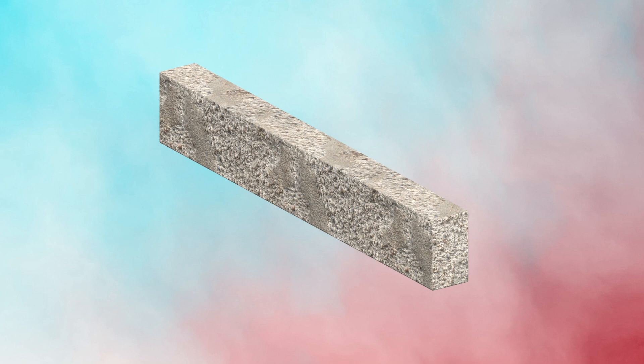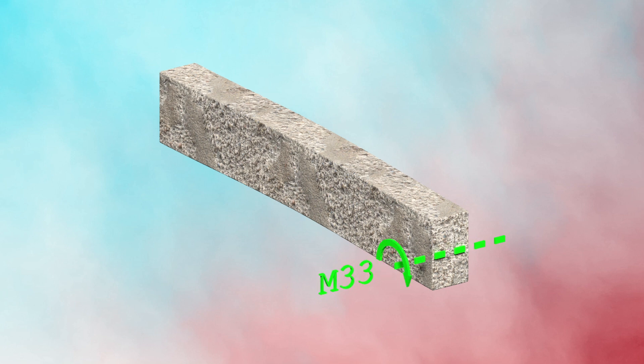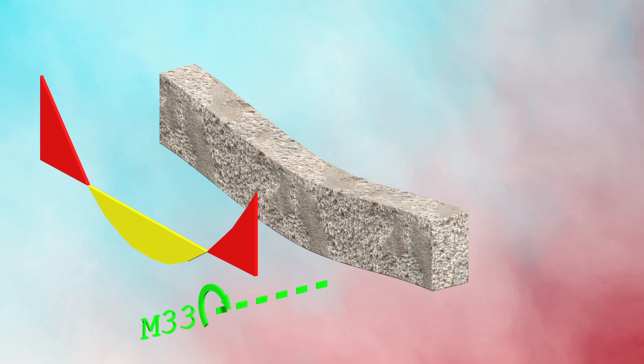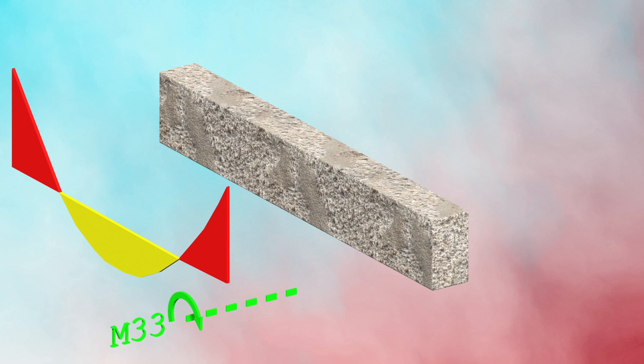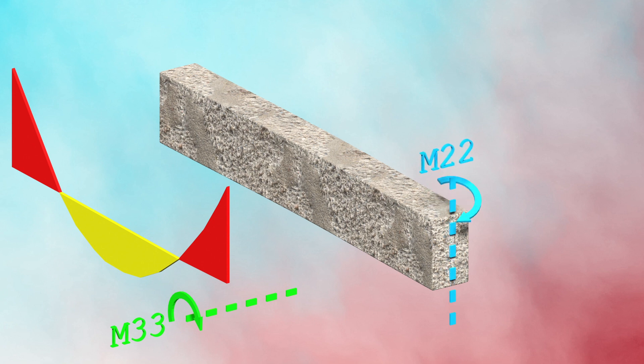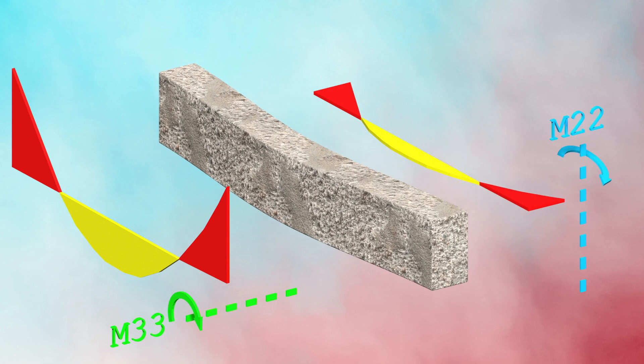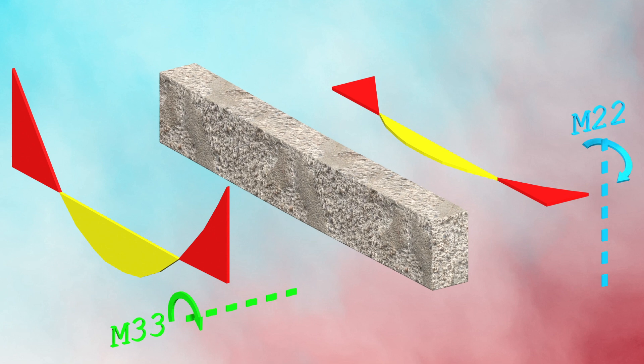For a beam, the horizontal axis is the major axis called M33, which shows major bending. The vertical axis is the minor axis, also called M22, which shows minor bending.